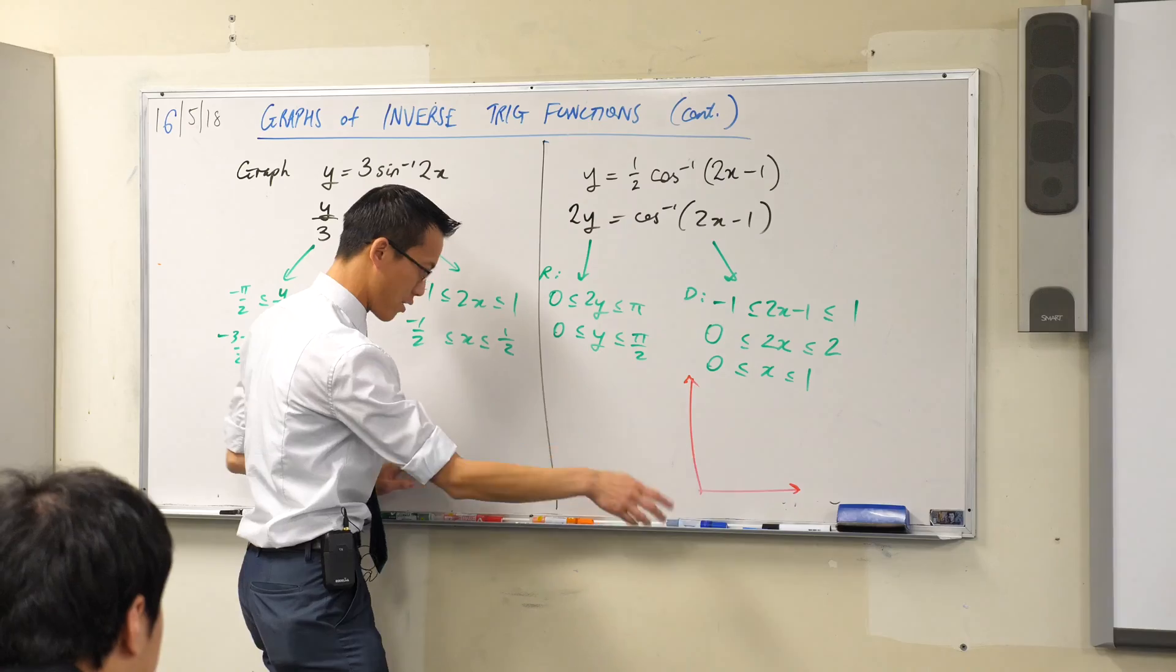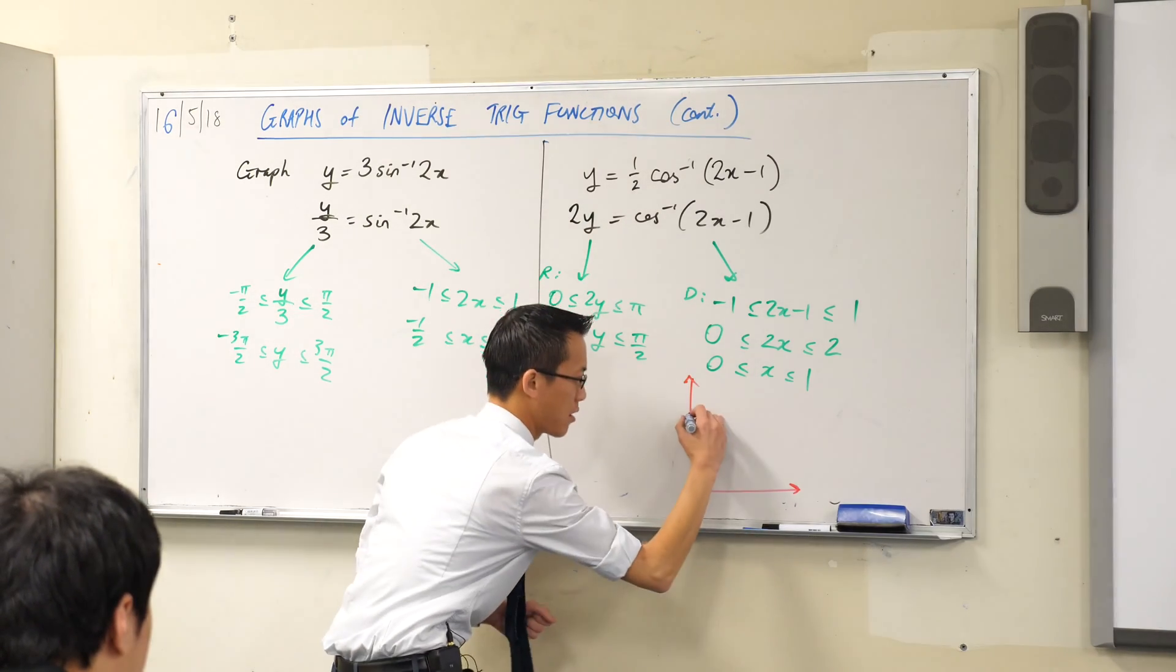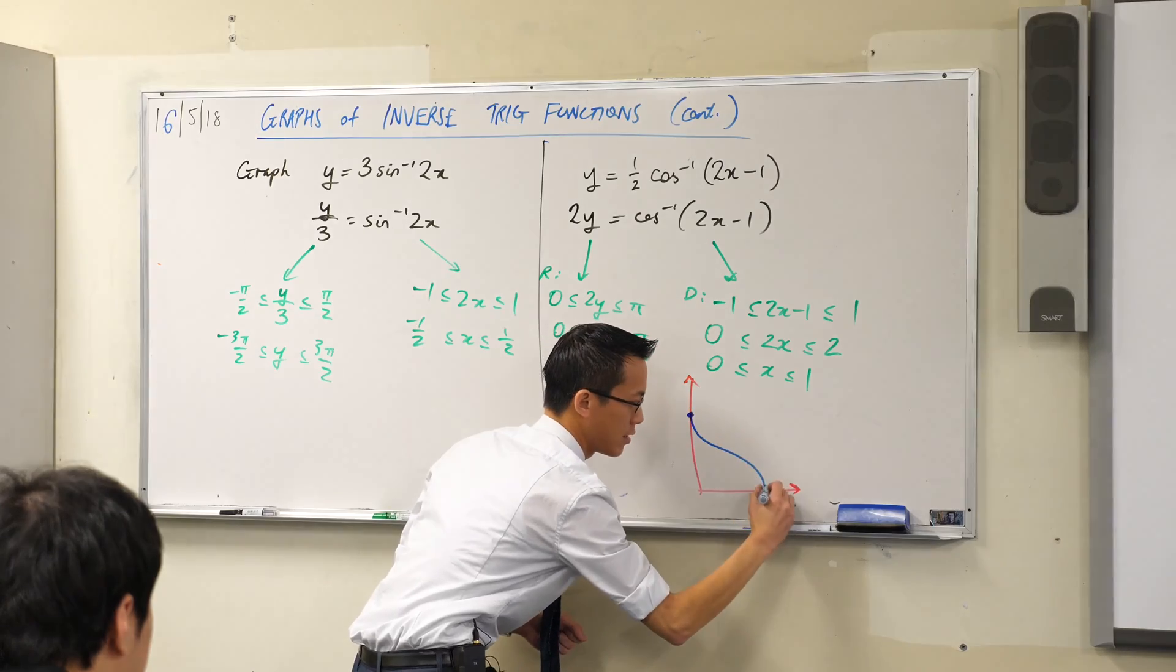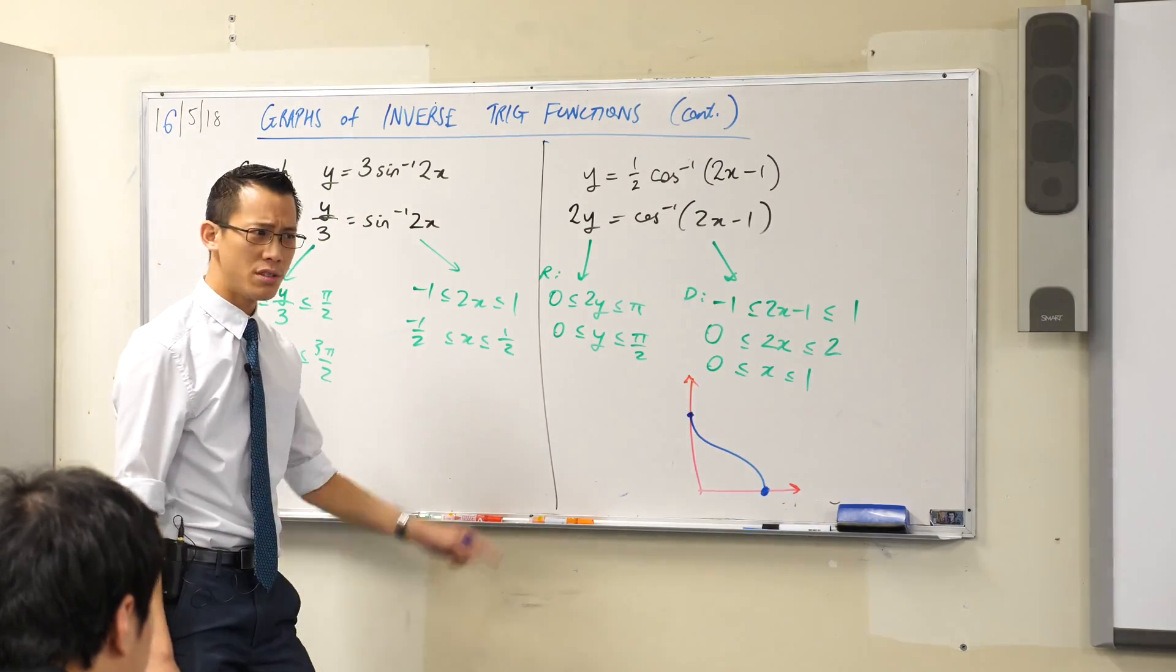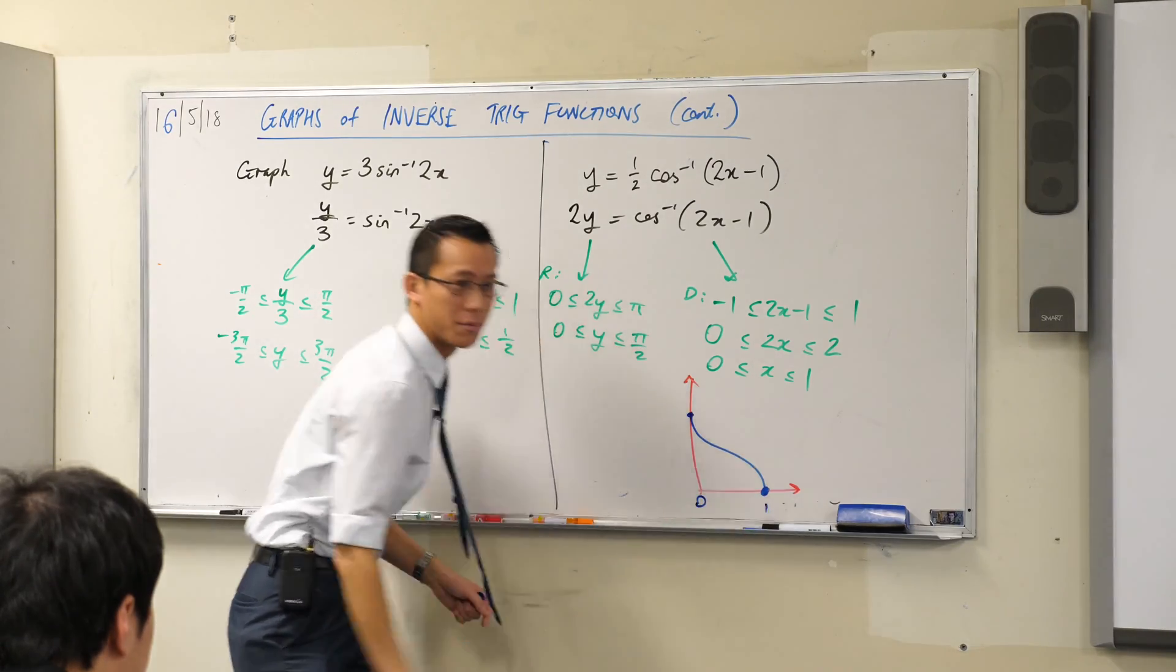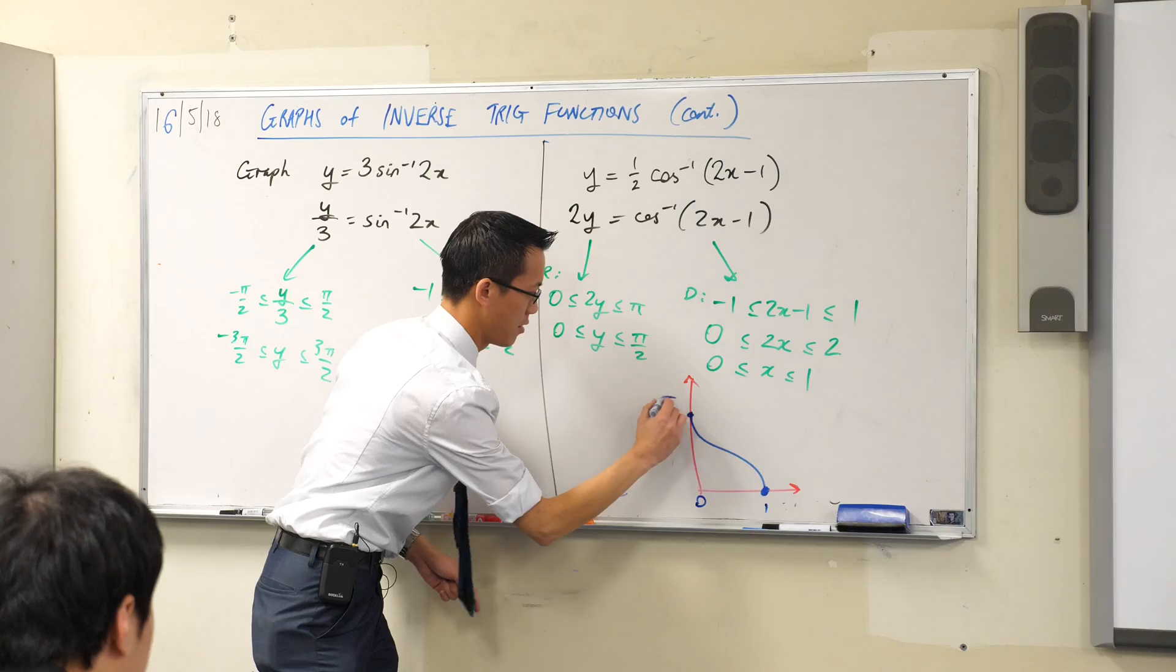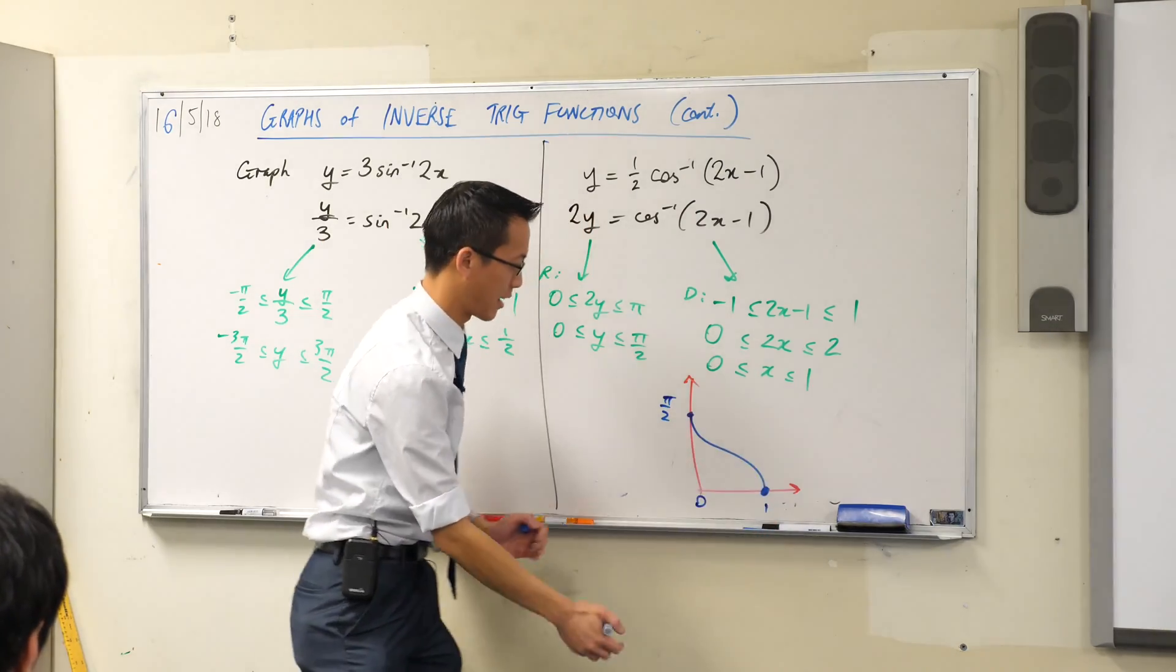So I'm going to start from pi on 2, here we go, I'm going to start up here, and then I'm going to curve downwards until I get to here. So do you see what's just happened? This is from 0 to 1 and 0 to pi on 2. It's not that you just move over one unit.